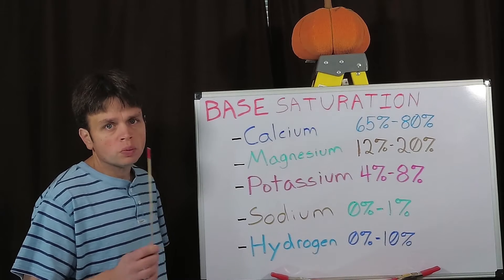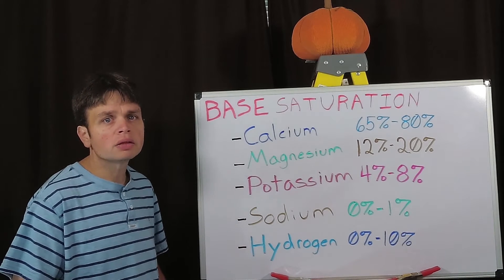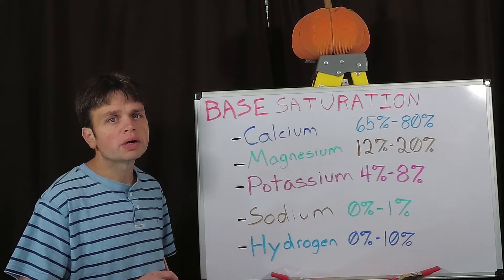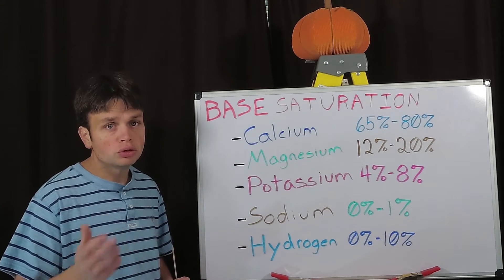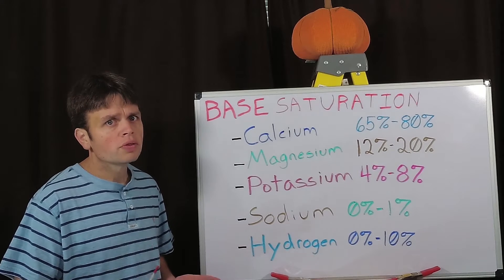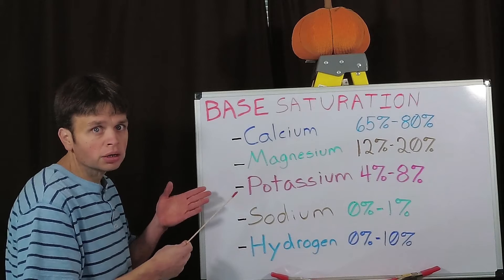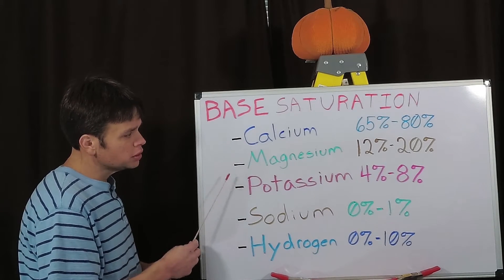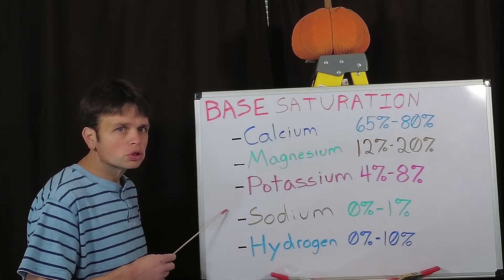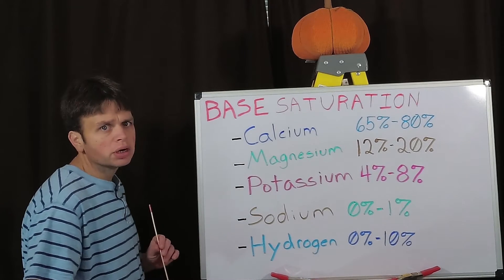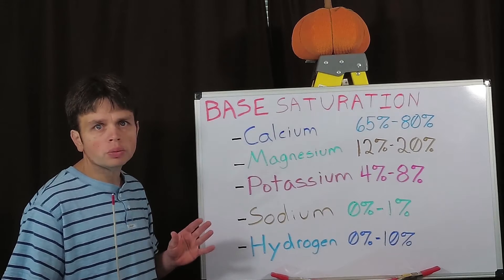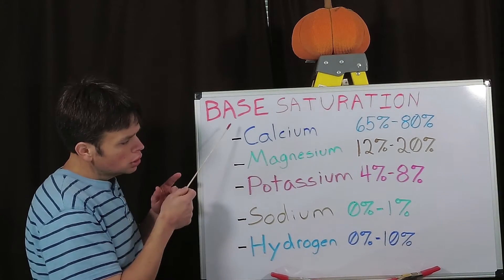With base saturation we are focusing on five elements and the key roles they play in our soil and how that helps our plants get the nutrients they need. The five nutrients or elements that need balance in our soils are calcium, magnesium, potassium, sodium, and hydrogen. We want to achieve balance in our soil by percentages or ratios of these five elements.